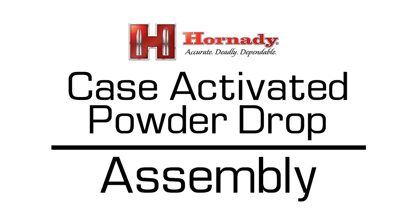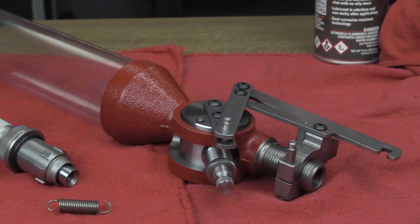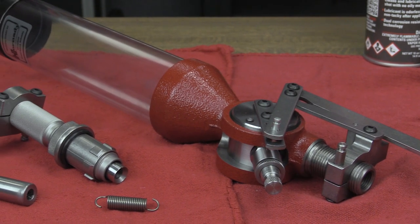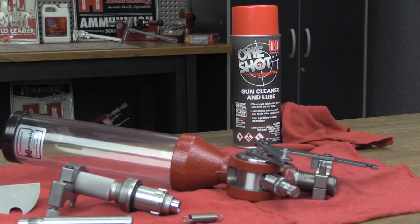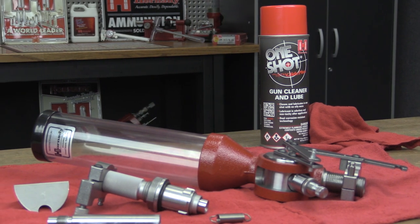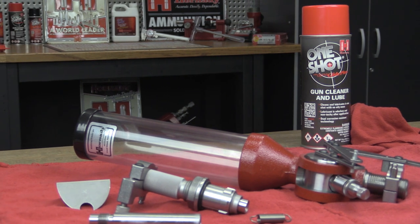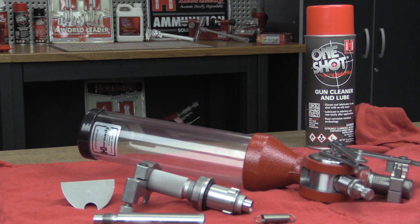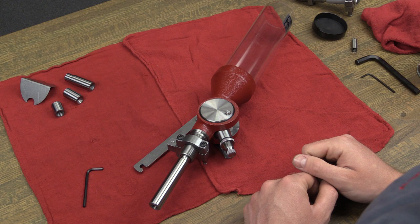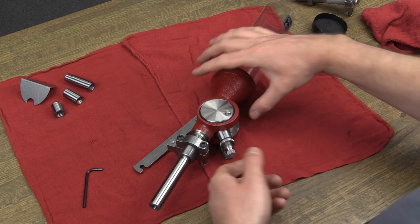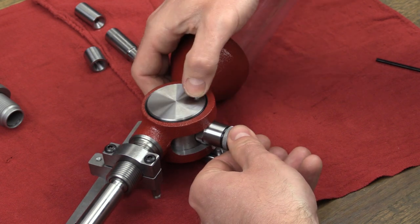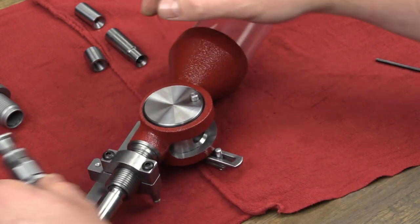Case activated powder drop assembly. The lock and load powder measure has been treated with a rust preventative that must be removed prior to use. We recommend that you disassemble the powder drop to clean and degrease all metal parts with Hornady One Shot Gun Cleaner and Lube, being sure to avoid spraying plastic parts. To begin disassembly, set the rotor with the metering unit perpendicular to the axis of the body. Press the push button and hold it down while removing the metering unit.